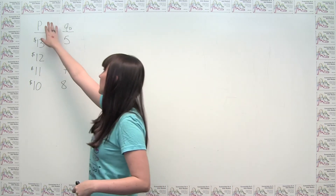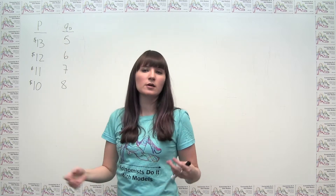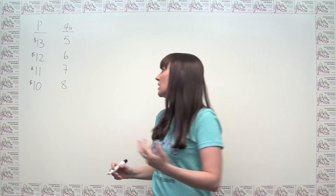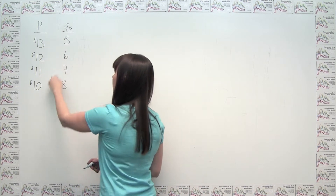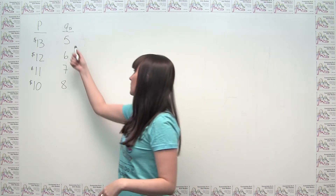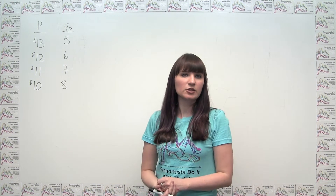Hey everybody! Today's practice problem doesn't come from a particular textbook. What we're going to be doing is looking at various ways to calculate revenue and think about revenue. We have some information labeled as p for price and q sub d for quantity demanded. For this particular company, at each price they feel like setting, this is how many customers are going to be lining up at their door — the quantity of output the firm can actually reasonably sell at each price point.